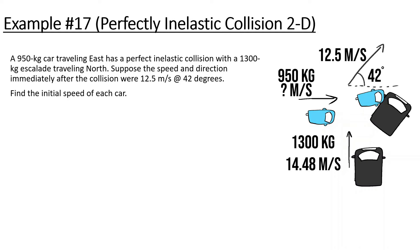Next problem: a 950 kg car traveling east has a perfectly inelastic collision with a 1300 kg Escalade traveling north. Suppose the speed and direction immediately after the collision were 12.5 meters per second at 42 degrees. Find the initial speed of each car — we don't know how fast either was going before the collision.